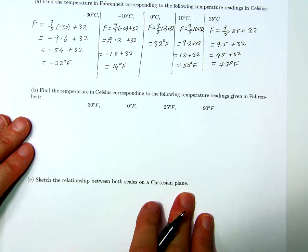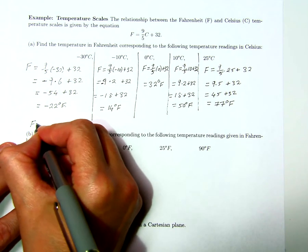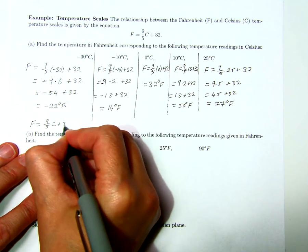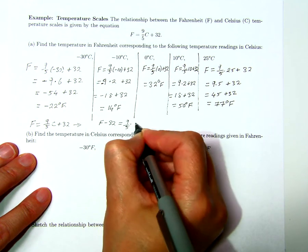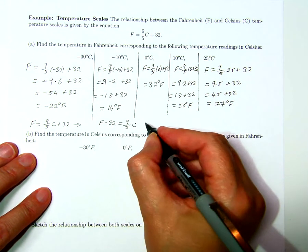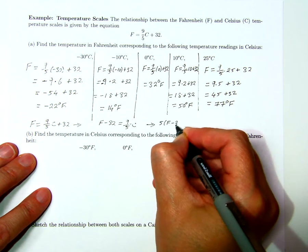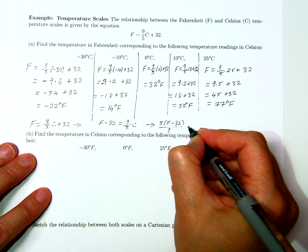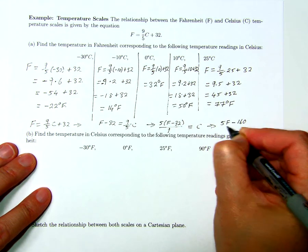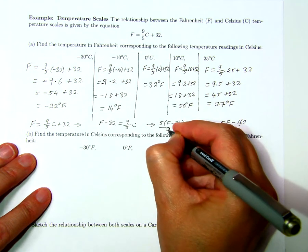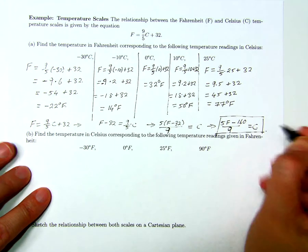We can go the other way by solving for C in terms of F. If F equals 9 over 5 times C plus 32, then F minus 32 equals 9 over 5 times C. Multiplying by 5 and dividing by 9, I get C equals 5 times (F minus 32) over 9, which simplifies to C equals (F minus 160) over 9.